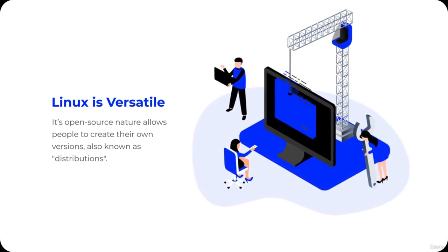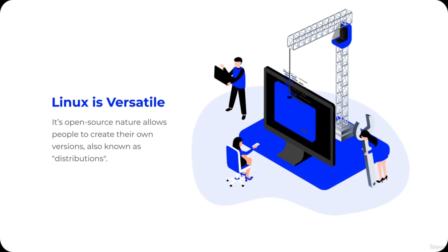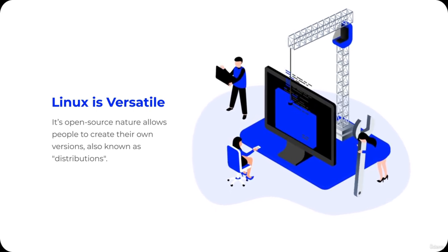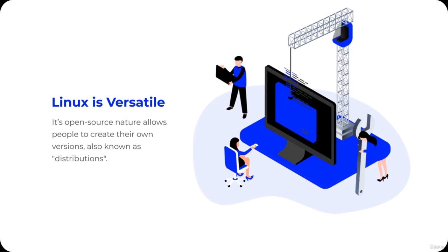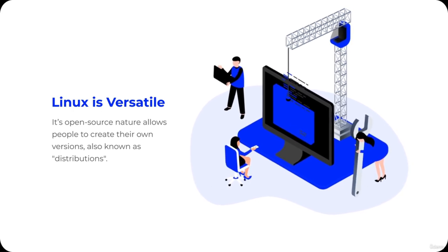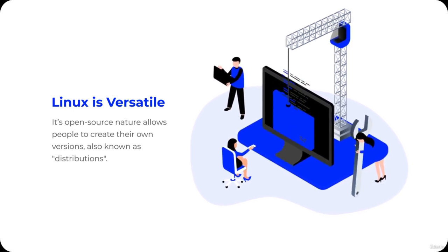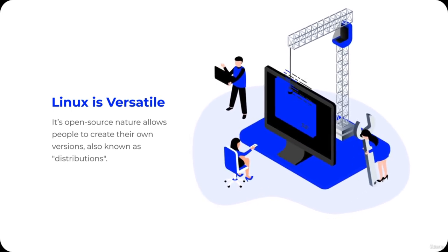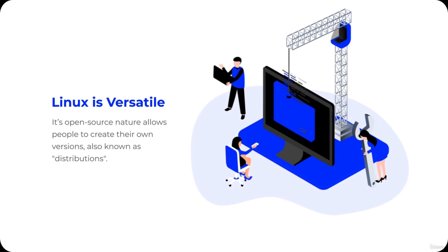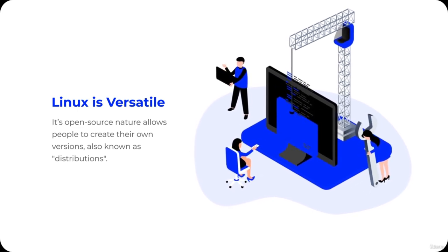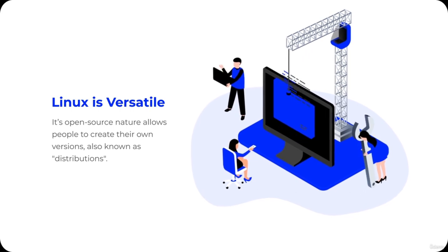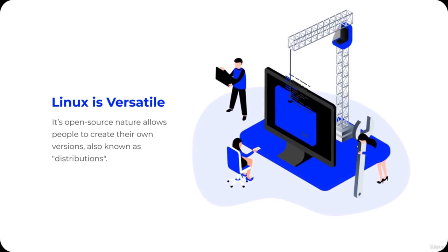Distributions can be thought of as different flavors of the same operating system, each built upon the same underlying code. Well-known examples include Ubuntu, Red Hat, and Arch Linux. With so many distributions to choose from, Linux can be tailored to suit anyone's specific needs, whether that's running a simple web server or even a supercomputer. In this course, we'll focus on Ubuntu, the most popular distribution.